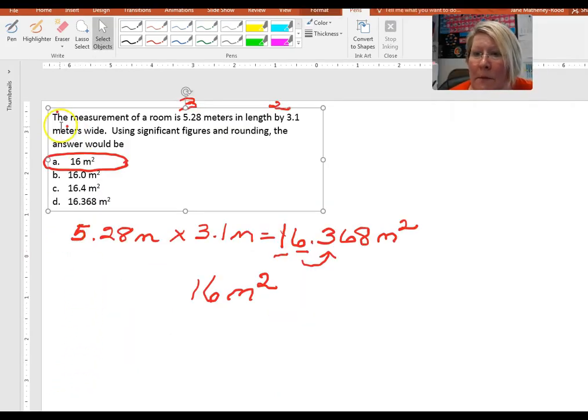Here is a problem that we're going to do. We're going to calculate the area of a room that is 5.28 meters in length and 3.1 meters wide. And the problem specifically states to use significant figures and rounding to determine your final answer. So 5.28 meters by 3.1 meters gives you 16.368 meters squared. Now we have to determine how many significant figures our final answer will have.